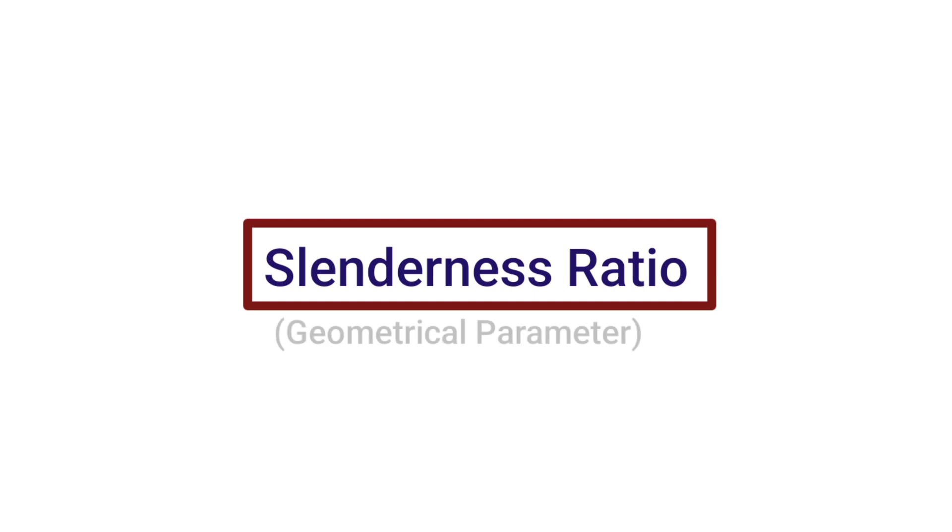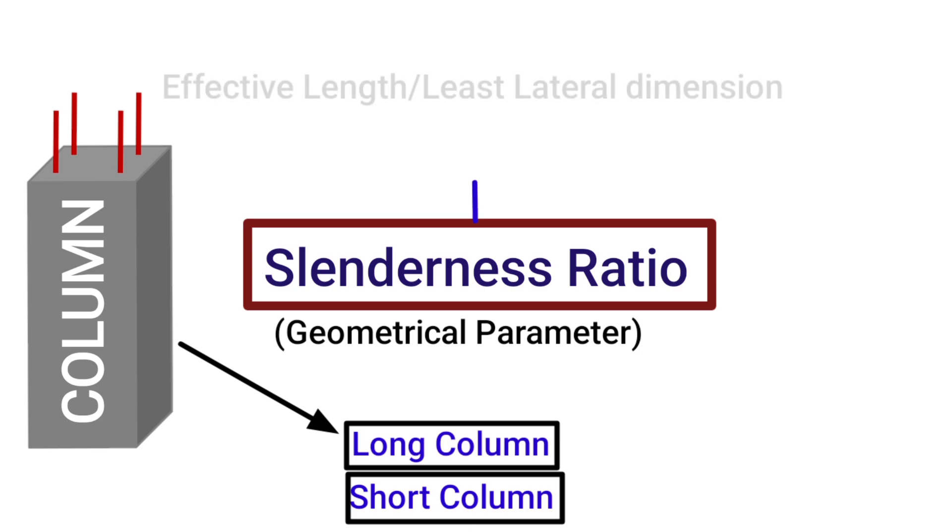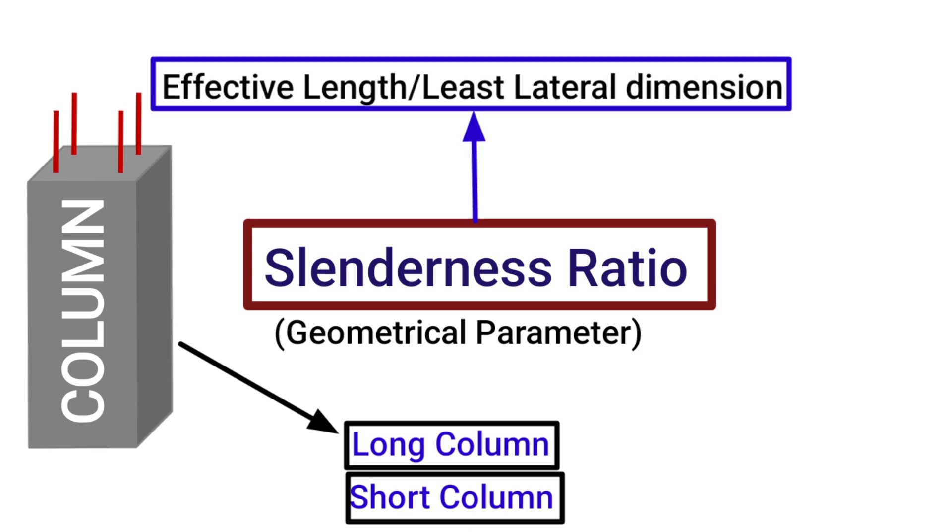Slenderness ratio is the geometrical parameter defined for a compression member like column to determine whether it is a long column or short column. It is the ratio of effective length of a column to its least lateral dimension. If the slenderness ratio of a column is greater than 12, such a column is termed as long column. And if this ratio is less than 12, then it would be called a short column.